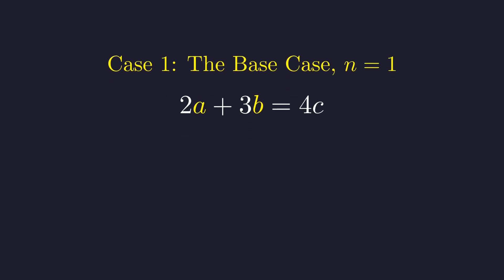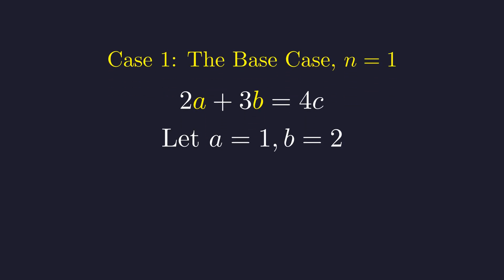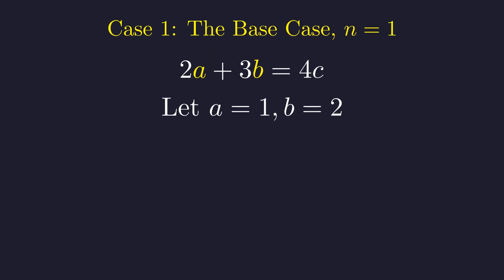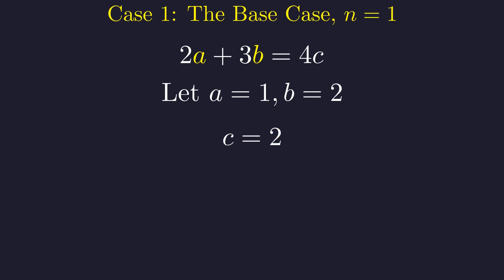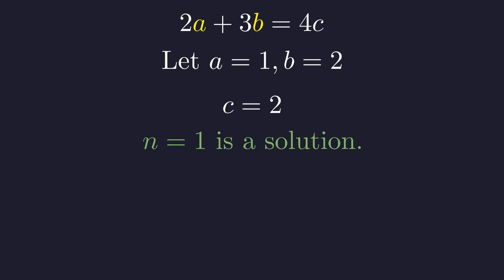Let's try some simple values. Let's test a equals one and b equals two. Substituting these into the left side gives us two plus six, which is eight. To find c, we just need to divide by four. This gives us c equals two. Since a, b, and c are all positive integers, we have found a valid solution. Therefore, n equals one is a valid solution to the problem.